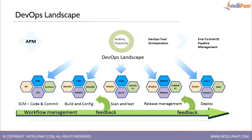Today we will discuss the various tools used in DevOps. The DevOps landscape has various tools — one category is for code and commit, meaning for developers who write code and commit it into a repository. Various tools are available: Git, SVN, TFS, Perforce. You will learn about them one by one. For code and commit, you choose any one — nowadays most people use Git.